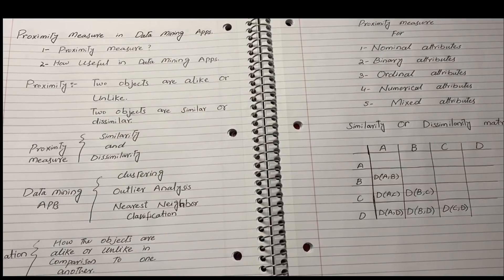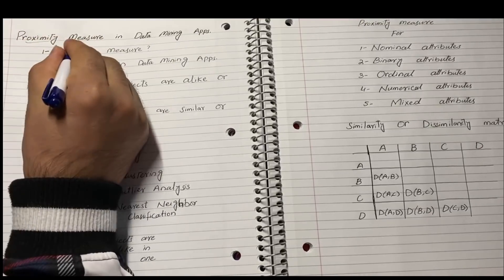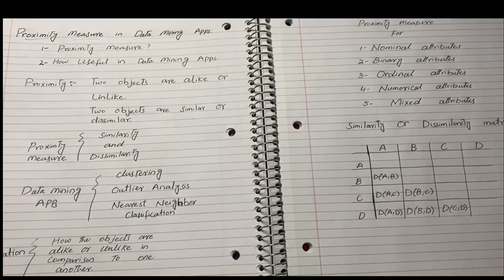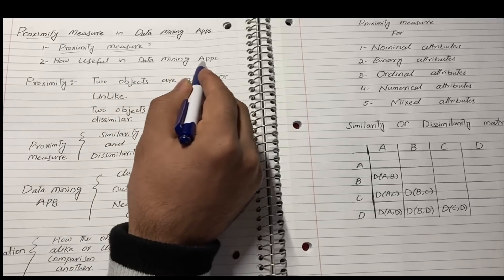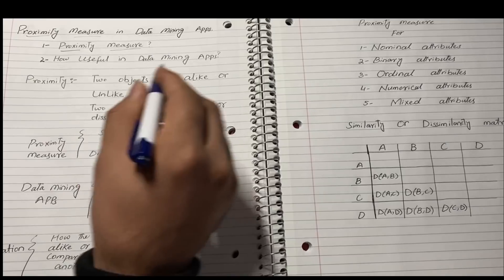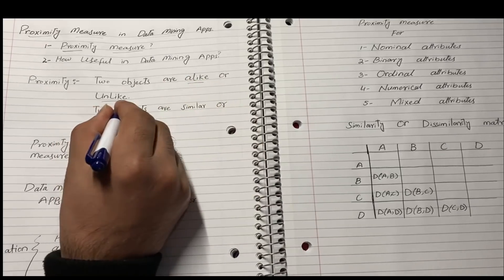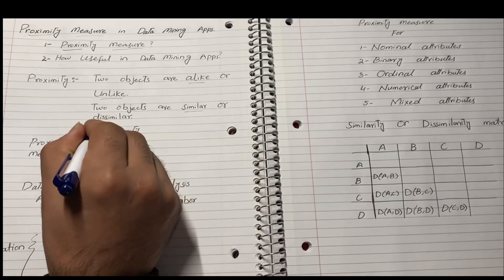Hi guys, this is Muhammad. Today our topic is proximity measures in data mining applications. Before we jump to the topic, we need to understand what proximity measures are and how they are useful in data mining. Proximity refers to whether two objects are alike or unlike — in other words, whether two objects are similar or dissimilar.